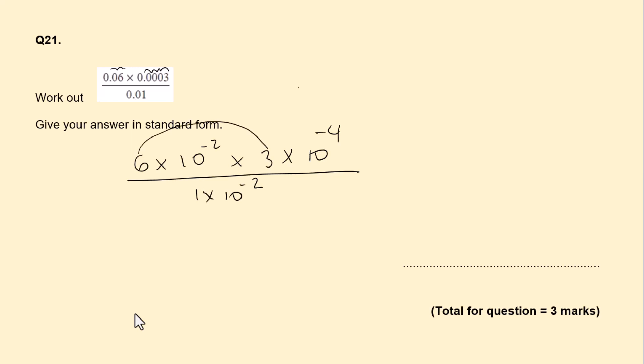Let's go ahead and multiply 6 and 3, which is 18, times, let's add the powers, minus 2 add minus 4, which is 10 to the power of minus 6, over 1 times 10 to the power of minus 2.